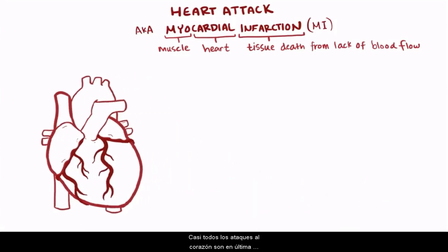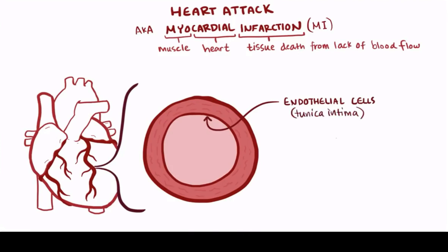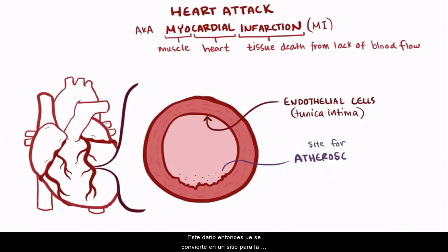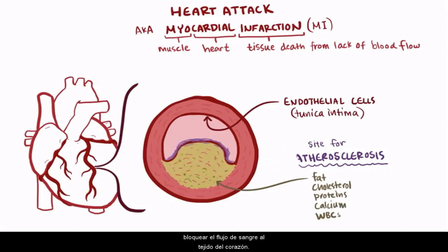Almost all heart attacks are ultimately a result of endothelial cell dysfunction, which relates to anything that irritates or inflames the slippery inner lining of the artery, the tunica intima. One classic irritant are the toxins found in tobacco, which float around in the blood and damage these cells. That damage then becomes a site for atherosclerosis, a type of coronary artery disease where deposits of fat, cholesterol, proteins, calcium, and white blood cells build up and start to block blood flow to the heart tissue.